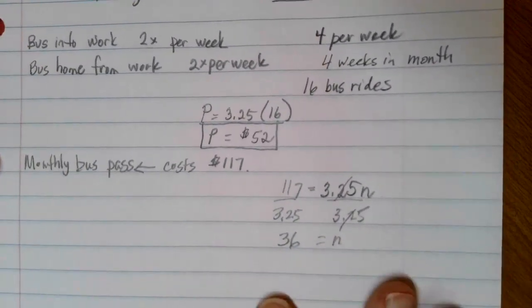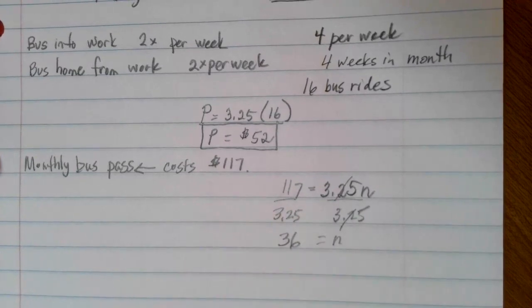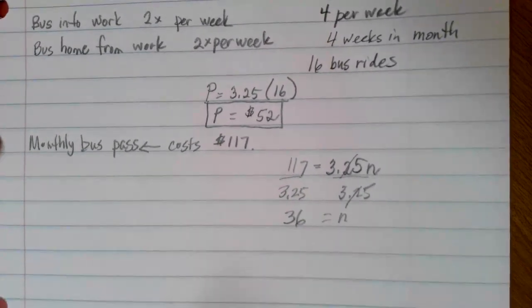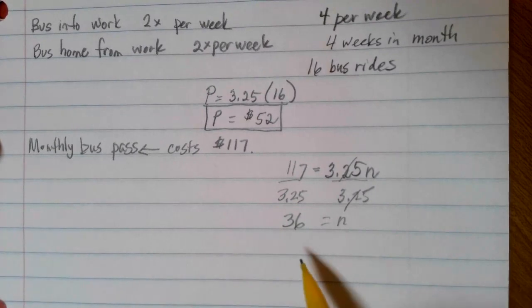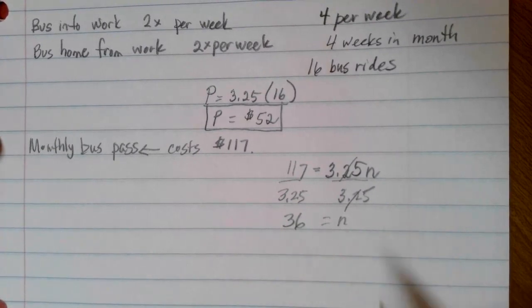I'm going to go ahead and pull my calculator out again. 117 divided by 3.25 is equal to 36. So what does that mean? At 36 rides, it doesn't matter if you use the monthly bus pass or if you pay for the individual passes. It would end up being exactly the same.